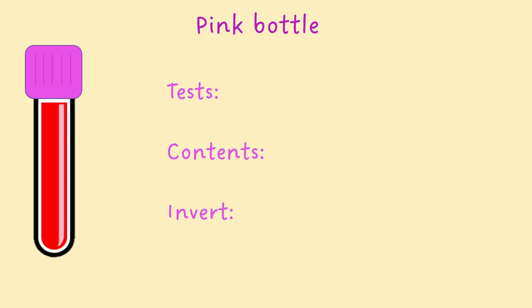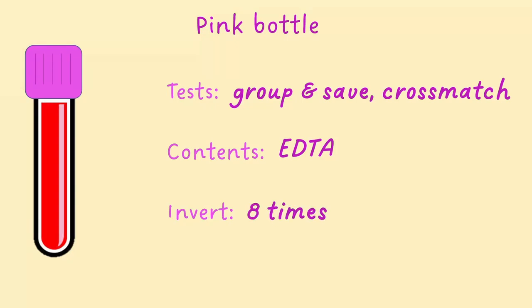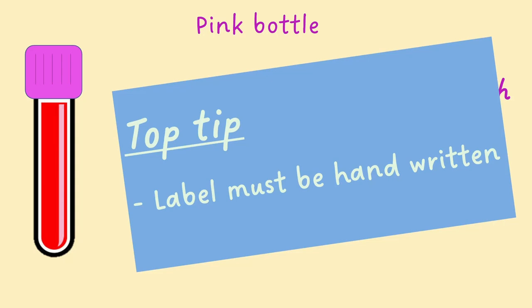The pink bottle has the same contents as the purple bottle, but is used specifically for the group and save and cross-match blood tests. These are both important for blood transfusions. The pink bottle should be inverted eight times. These tests need to be done in the pink bottle, as they should always be handwritten to avoid any potentially dangerous errors in giving patients incorrectly matched blood.